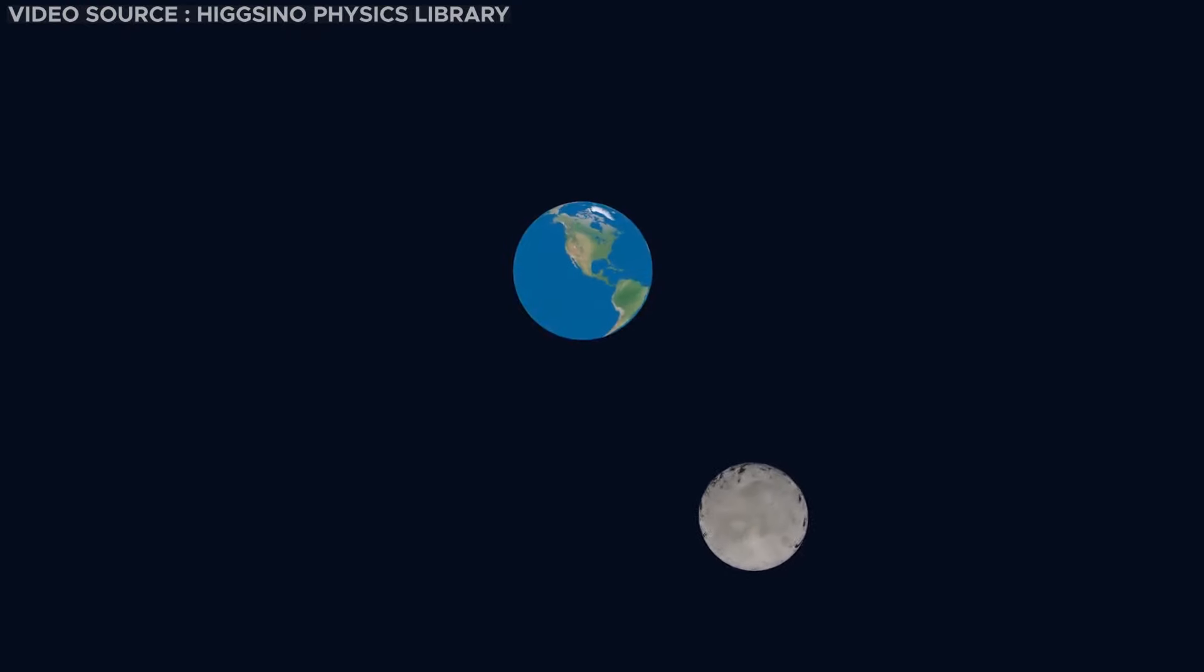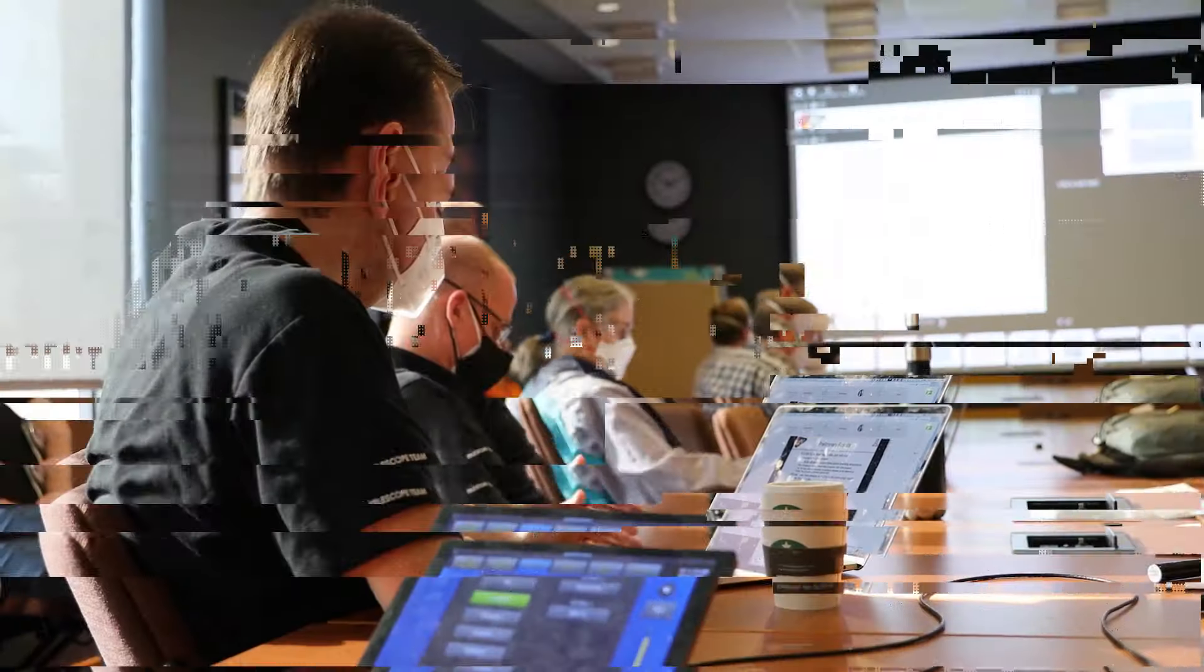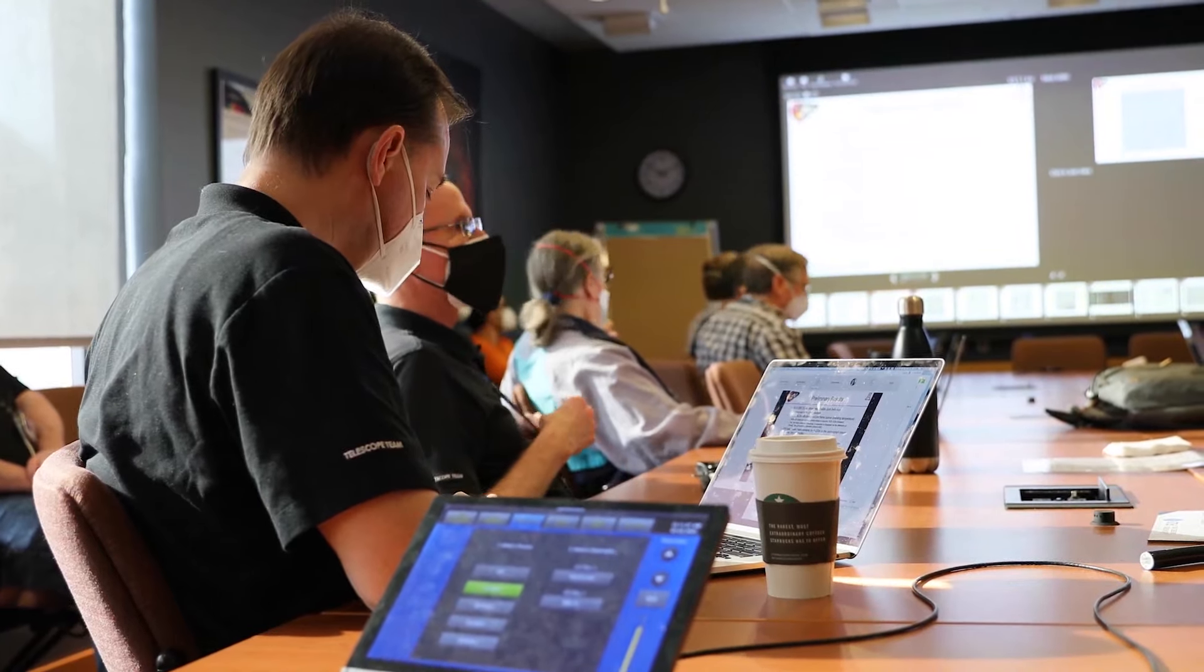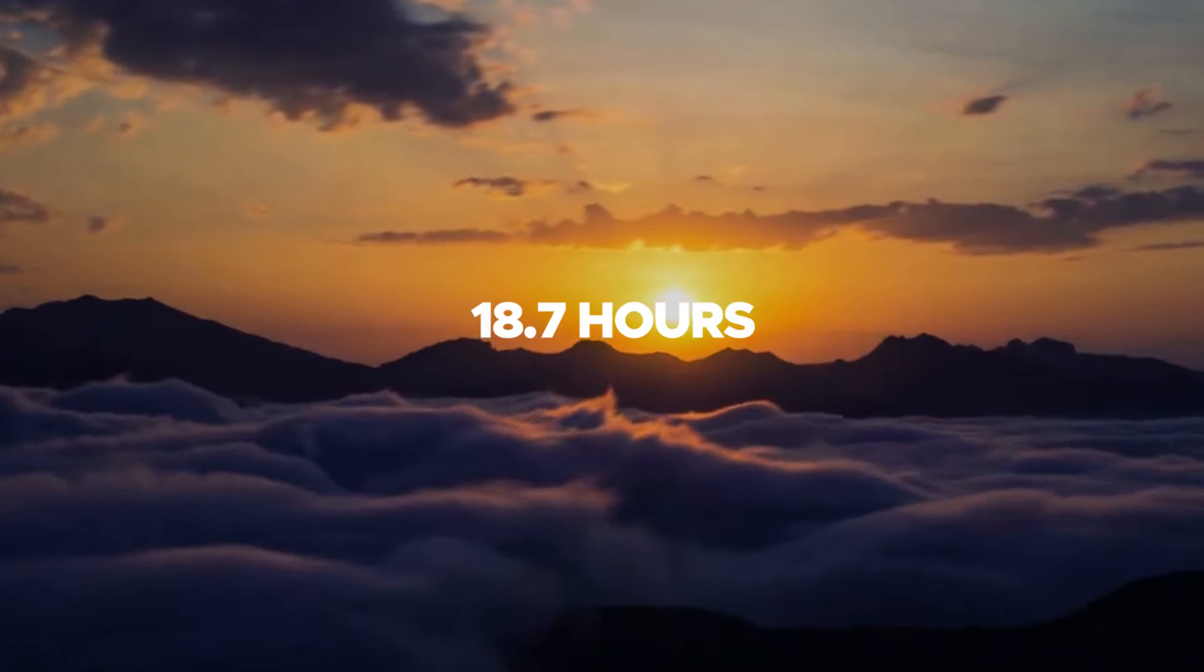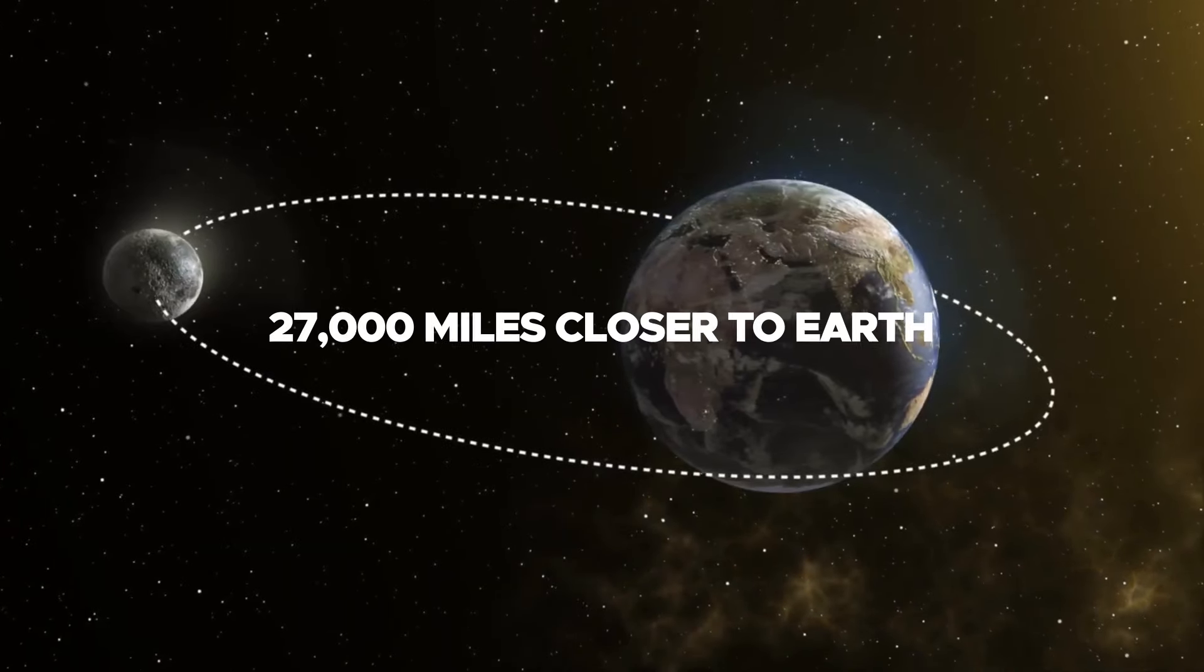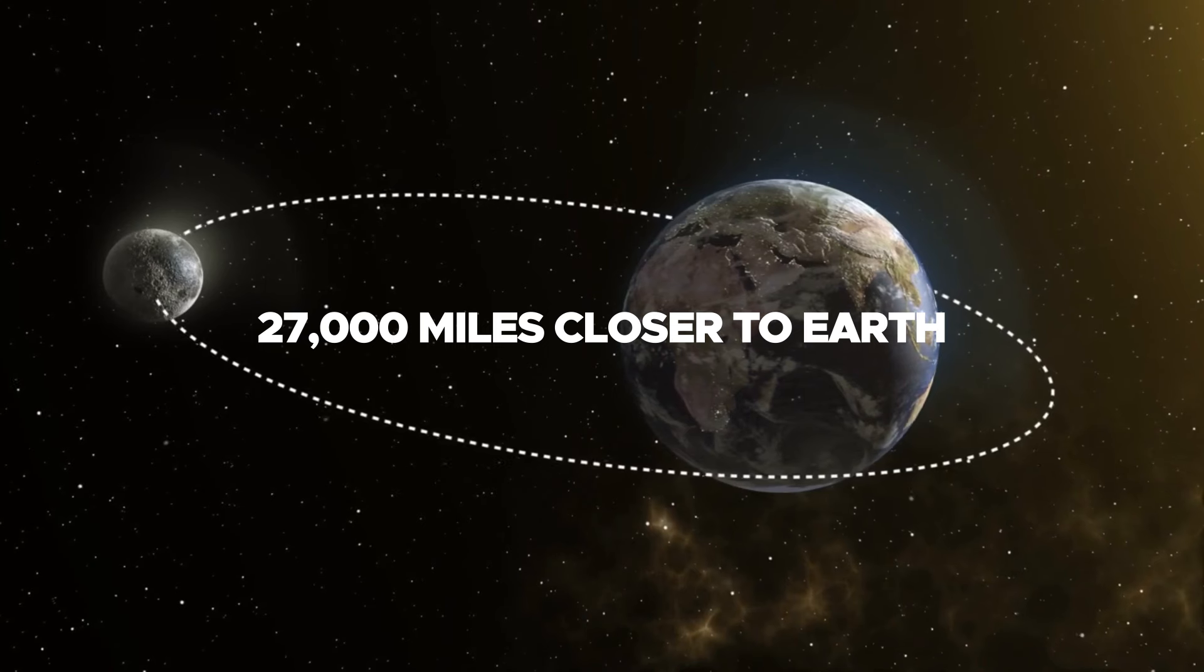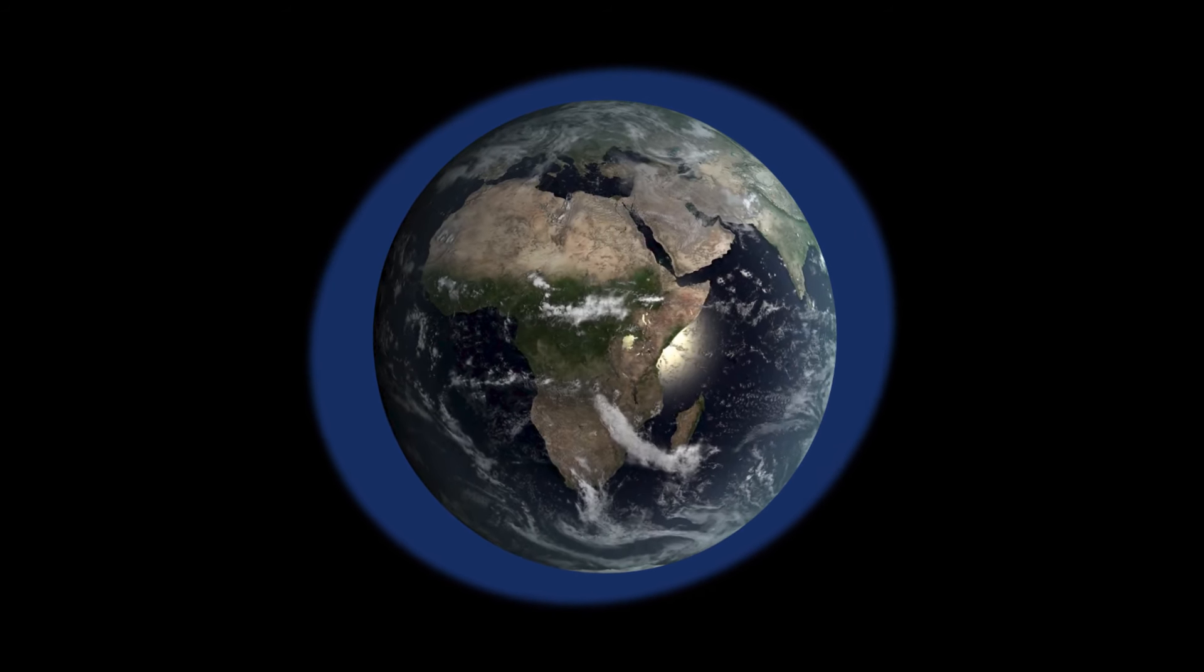This process has been taking place for as long as the Moon has been circling the Earth. According to one academic estimation, around 1.4 billion years ago, a day spanned a mere 18.7 hours, with the Moon positioned approximately 27,000 miles closer to Earth than its current orbit.